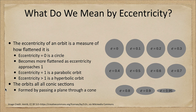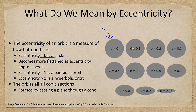So what do we mean by eccentricity when we talk about that in terms of an orbit? Well, the eccentricity is a measure of how flattened the orbit is. An eccentricity of zero is a circle. Here we have an eccentricity of zero, and we go up by tenths, all the way to 0.95.